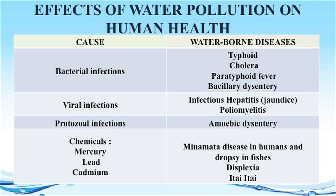Let us see how water pollution affects human health. One cause of water pollution is bacterial infection, which causes waterborne diseases like typhoid, cholera, paratyphoid fever and bacillary dysentery. Viral infections like infectious hepatitis and poliomyelitis are caused by viral infection in water. Protozoal infection causes waterborne disease like amoebic dysentery. Chemicals are also very harmful. For example, mercury in water causes Minamata disease in humans and dropsy in fishes. Lead causes dyslexia, whereas cadmium in water causes Itai-itai disease.